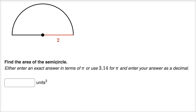Find the area of the semicircle. Pause this video and see if you can figure it out. We know that the area of a circle is equal to pi times our radius squared.